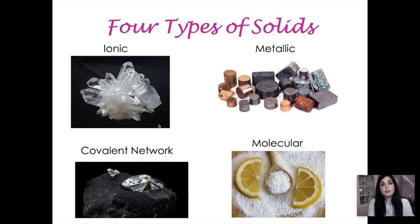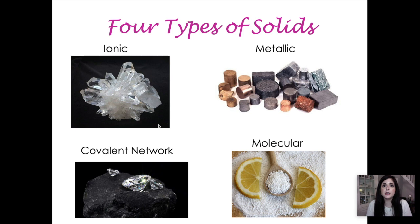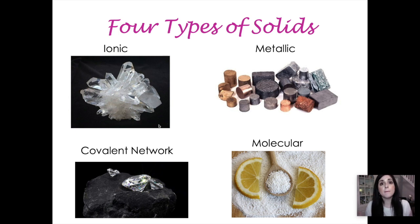Let's talk about these four different types of solids. The first two are easy because those types of solids contain those types of bonds. So there's ionic solids, metallic solids, covalent network solids, and molecular solids. Covalent network solids and molecular solids both contain covalent bonds, but the difference is what holds together the molecules within that structure.